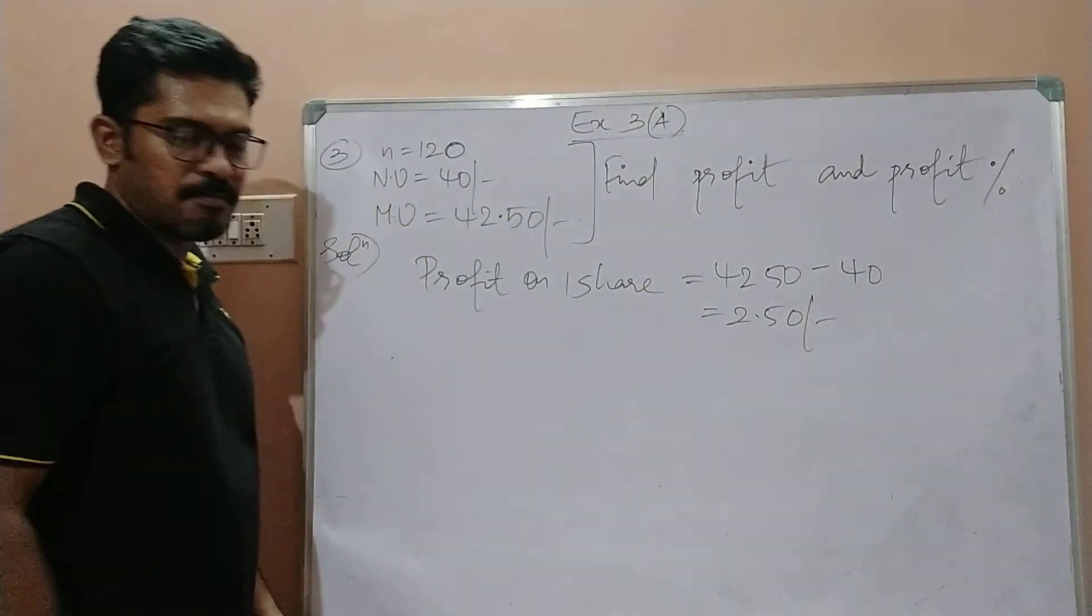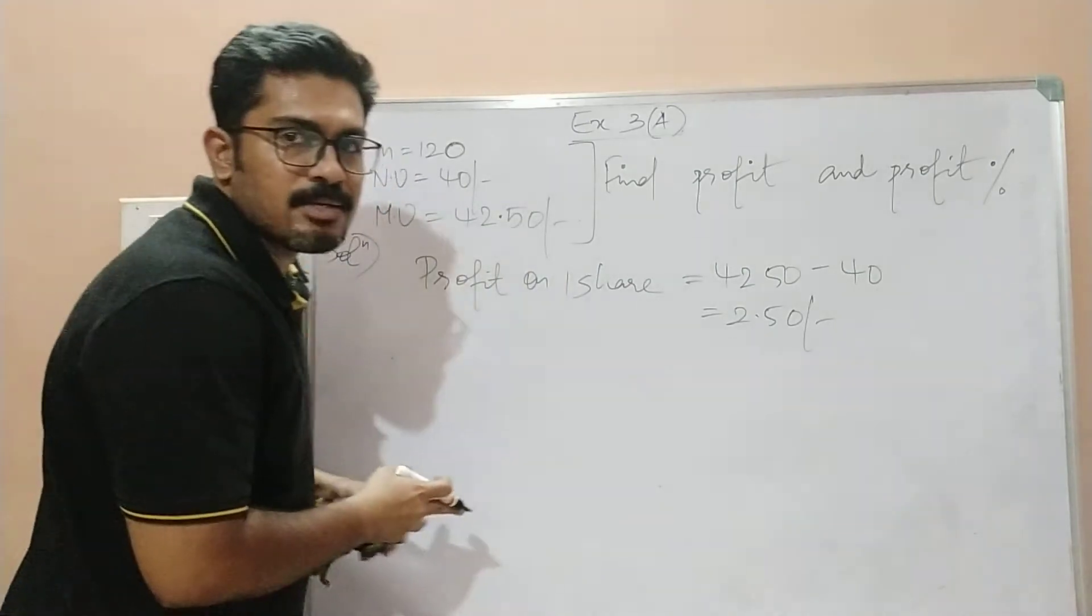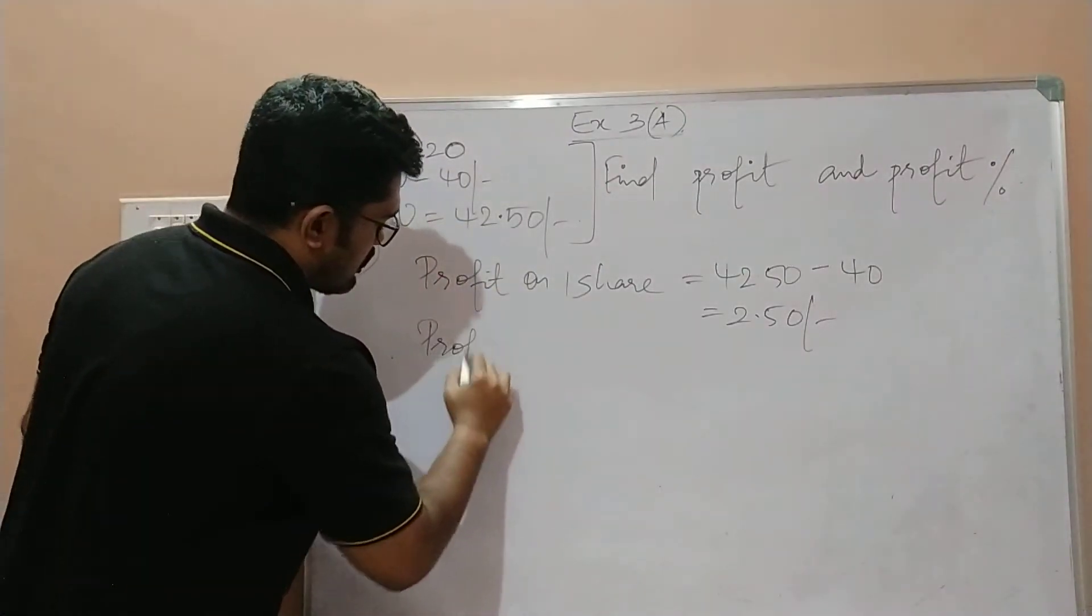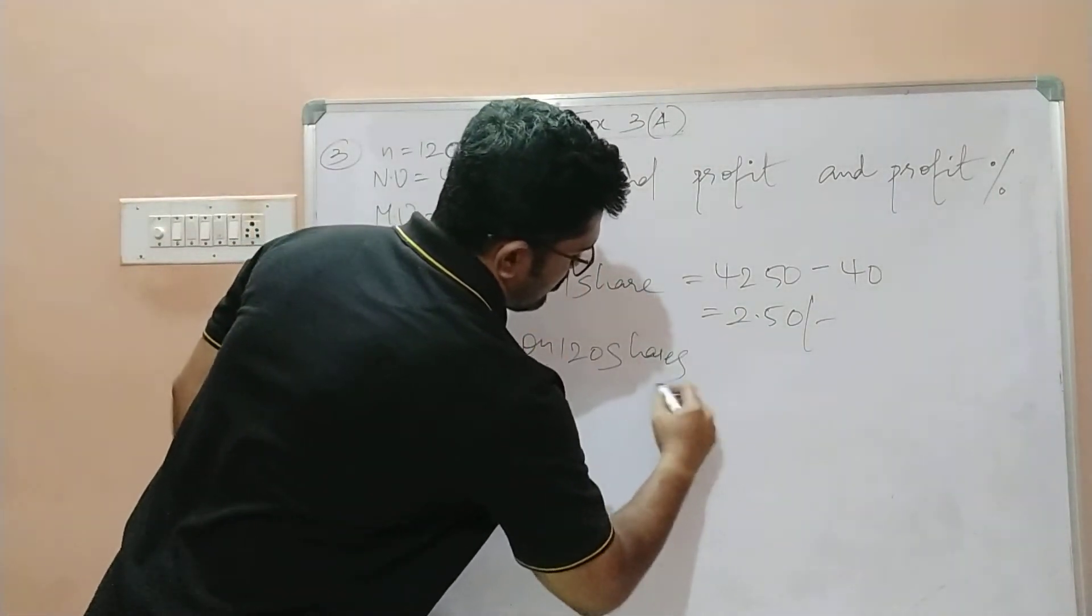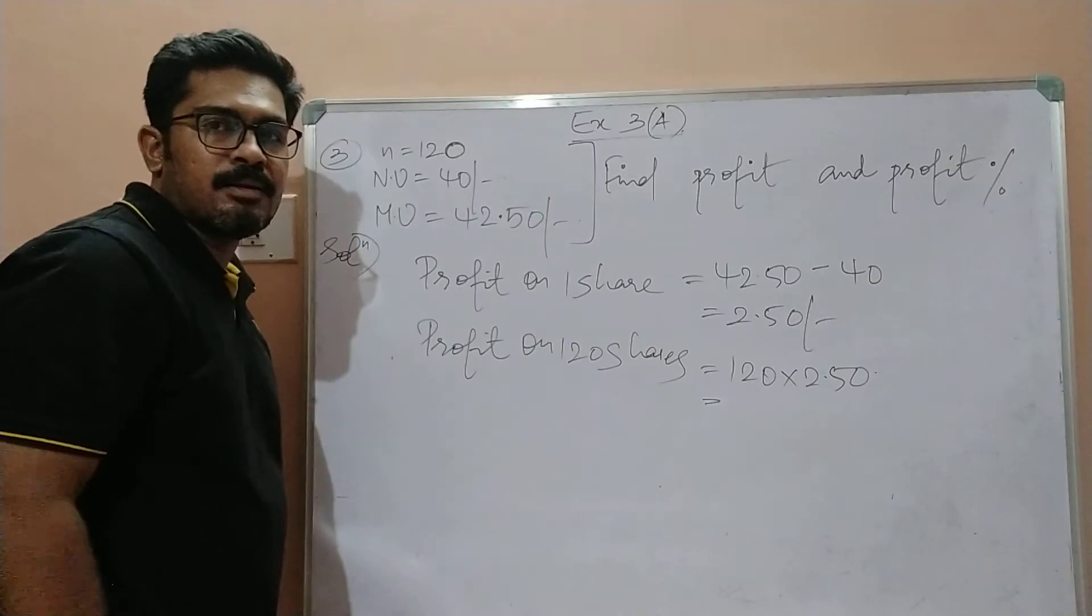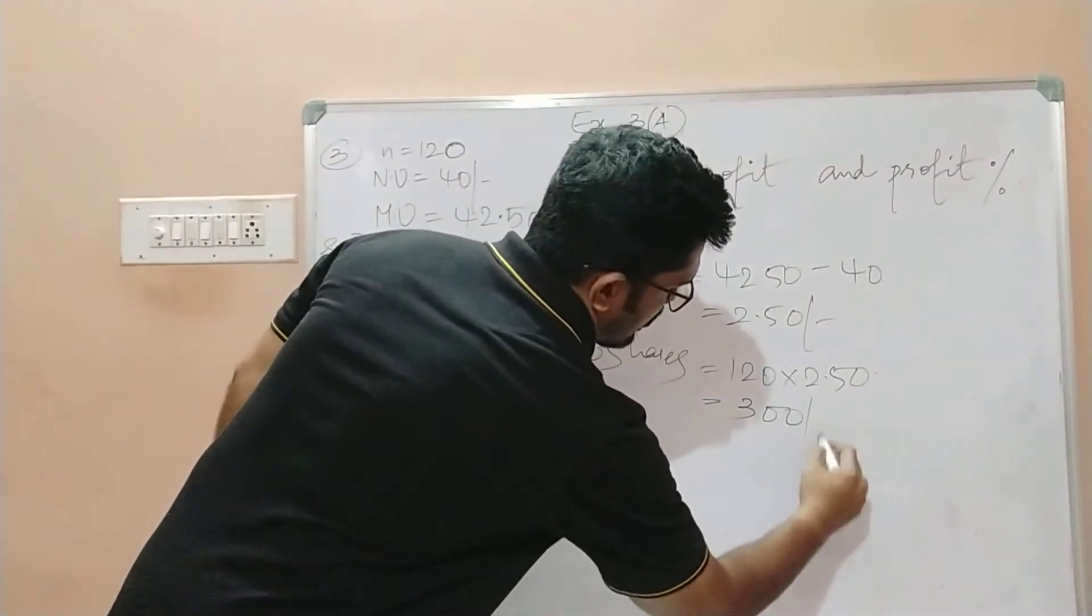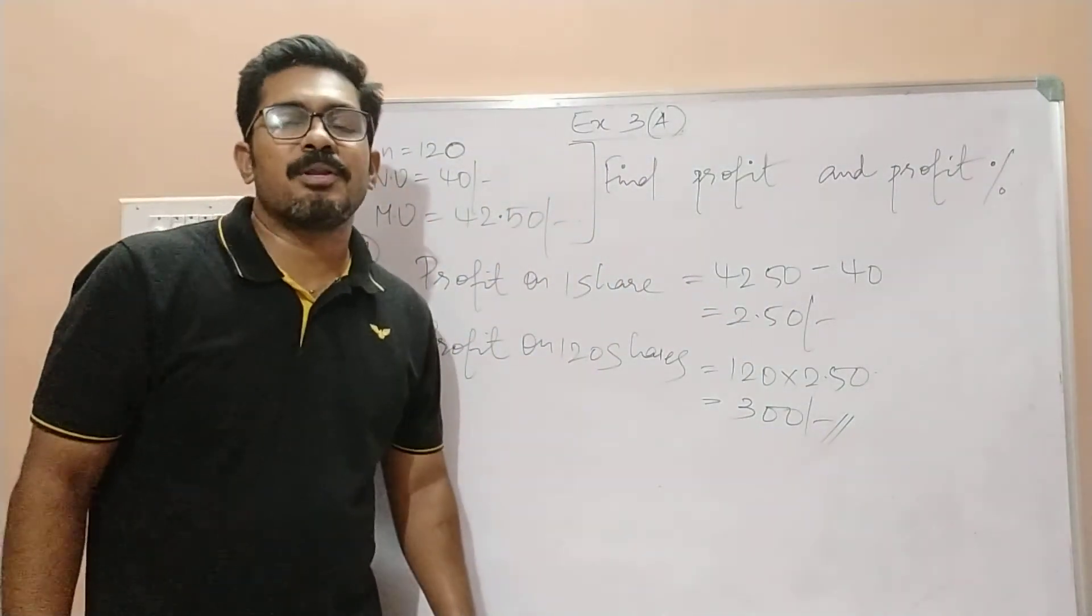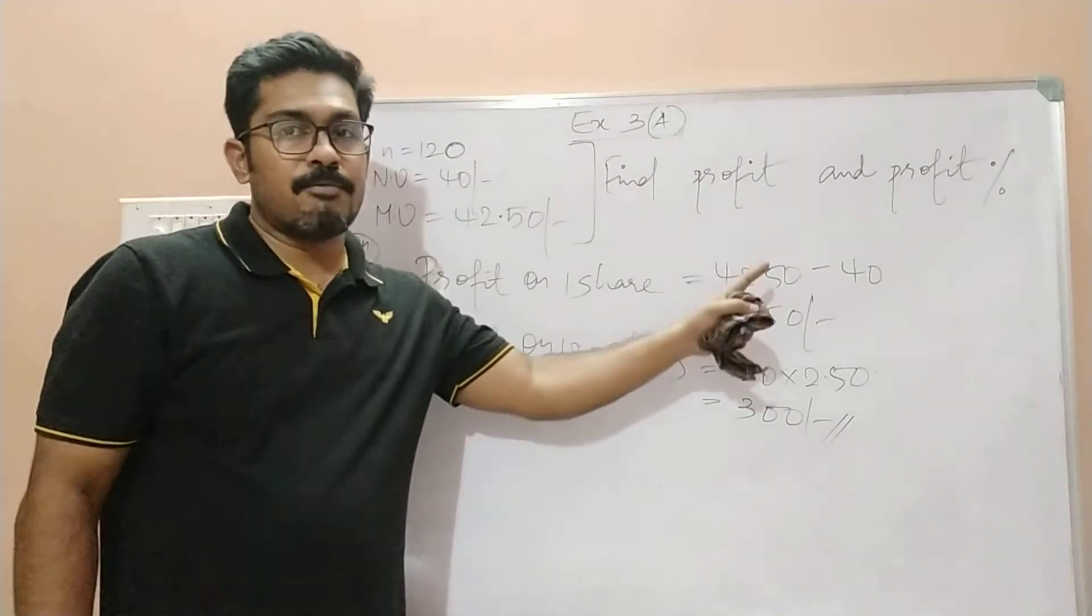Now children, I am selling how many shares? 120 shares. Therefore the profit on 120 shares will be equal to 120 multiplied by 2 rupees 50 paise. It should be 120 into 2 rupees 50 paise, I think it is 300 rupees. So 300 rupees is the total profit that I made by selling 120 shares.